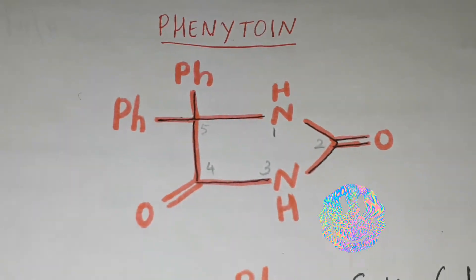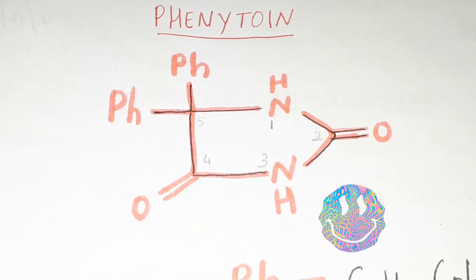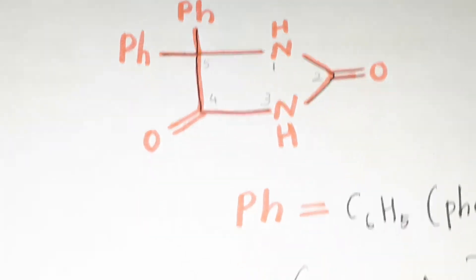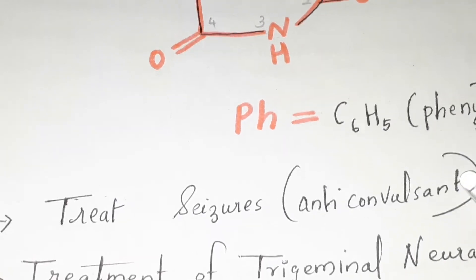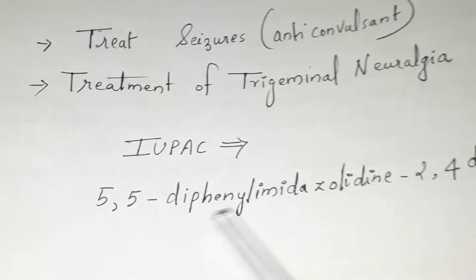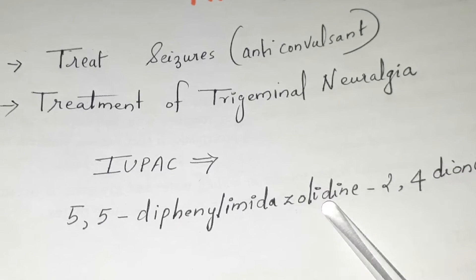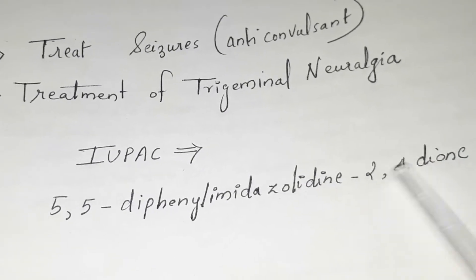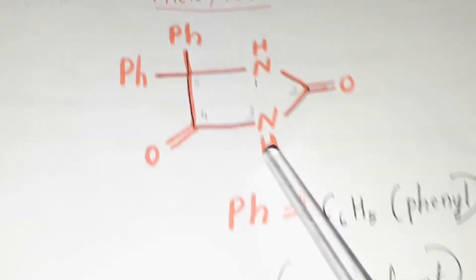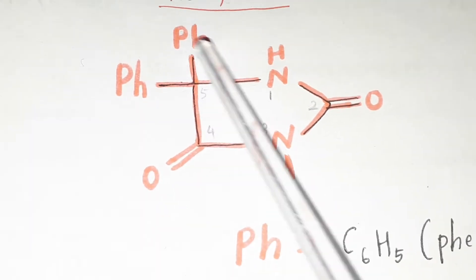Phenytoin is an anti-convulsant or anti-epileptic drug. It comes under the classification of hydantoin derivative. The IUPAC name of phenytoin is 5,5-diphenylimidazolidin-2,4-dione. If we look at the structure, in the fifth position there are